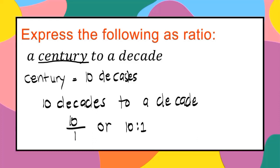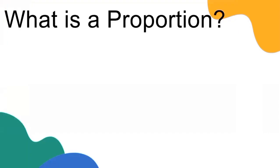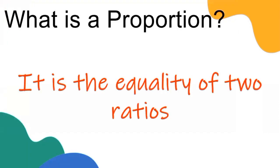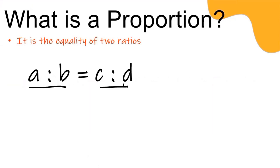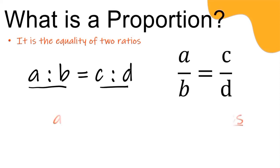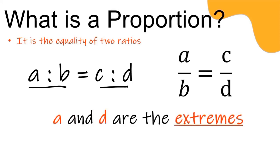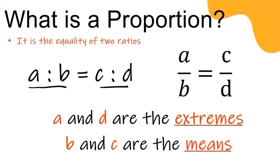Now, what is a proportion? A proportion is the equality of two ratios. It can be written as 'a is to b equals c is to d' — ratio equals ratio, therefore equality of two ratios. It can also be written as a over b equals c over d, where a and d are the extremes, and b and c are the means.